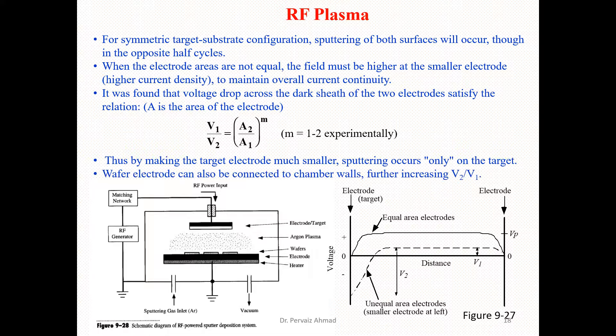A vapor electrode can also be connected to the chamber walls to further increase the V2/V1 ratio. Connecting the vapor electrode to the chamber wall is the way to increase the voltage ratio between V2 and V1.